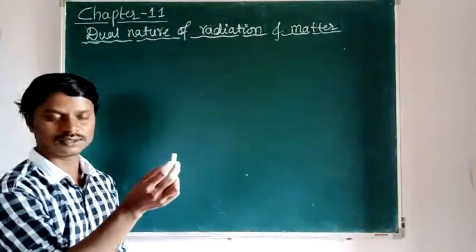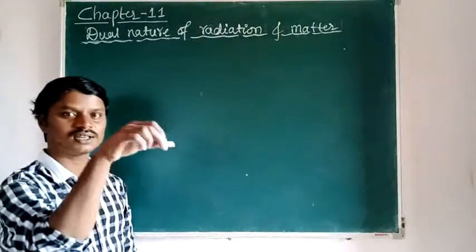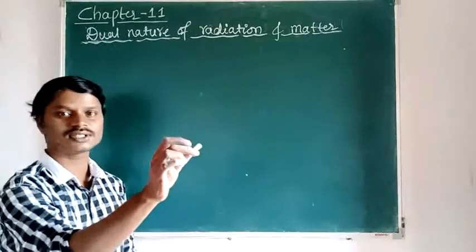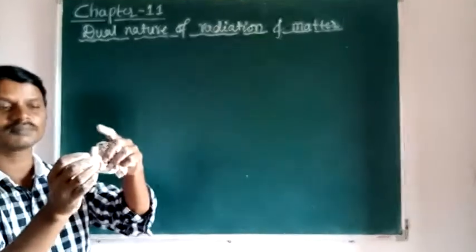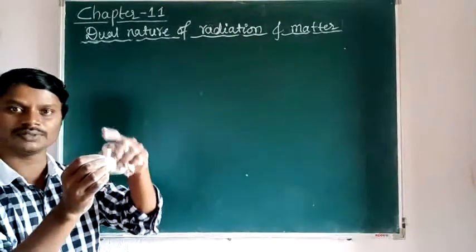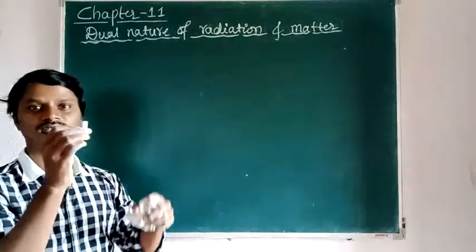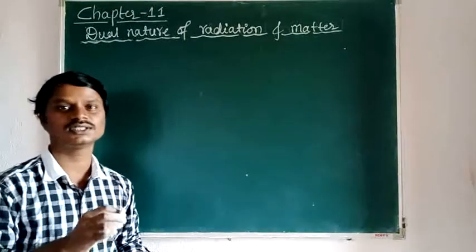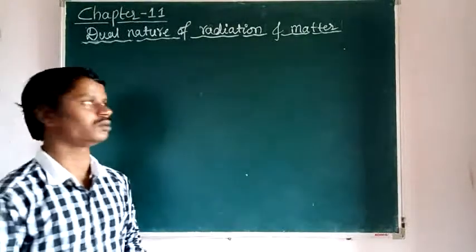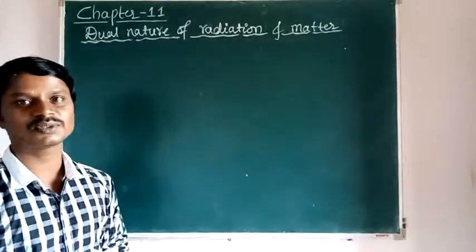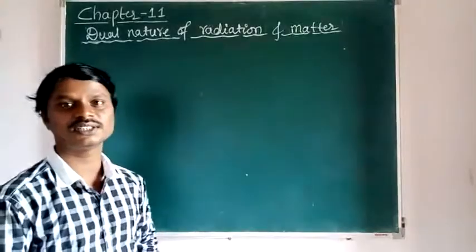Consider this chalk — it is a matter, so it is already a particle. Whenever this particle is in motion, there is a wave associated with this particle, meaning this matter has particle nature and also wave nature. The wave nature of the moving particle was discovered by physicist Louis de Broglie in 1924. In this chapter, we are going to discuss about the particle nature of radiation and the wave nature of matter.